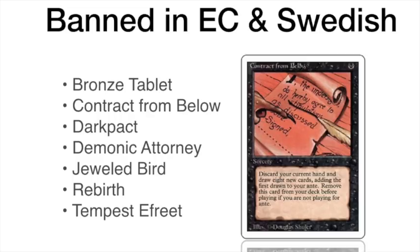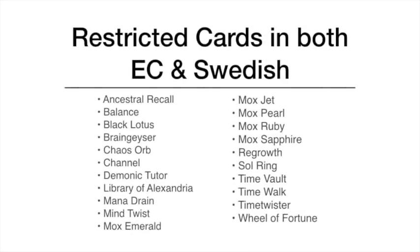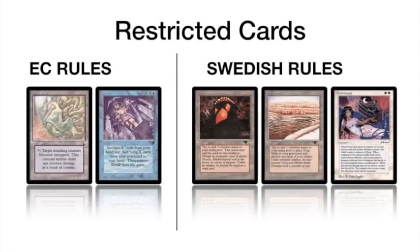One thing I really like about these old school formats is that those are the only cards that are banned — if a card is too powerful it usually gets restricted. The Power Nine is restricted in both formats: you can only play with one Mox of each, one Black Lotus, one Ancestral Recall, one Demonic Tutor, and so on. Let's look at the differences between the restricted cards in EC and Swedish.